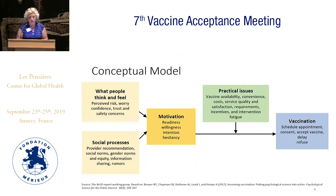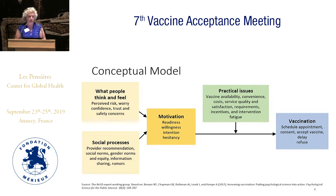This is the model I mentioned, and it's based on a paper that Noel led on the psychology of vaccination. It's imperfect and simplified, but it's been a useful guide for mapping out what we need to start looking at.